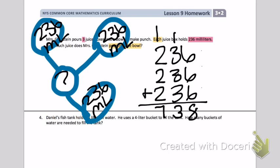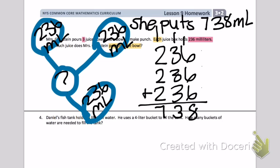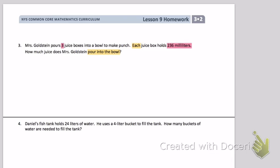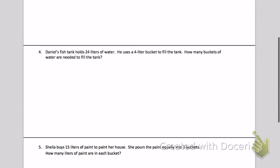So I'm going to write a sentence to explain how much juice Mrs. Goldstein puts in the bowl. She puts 738 milliliters in the bowl. Let's go back and look at number four.